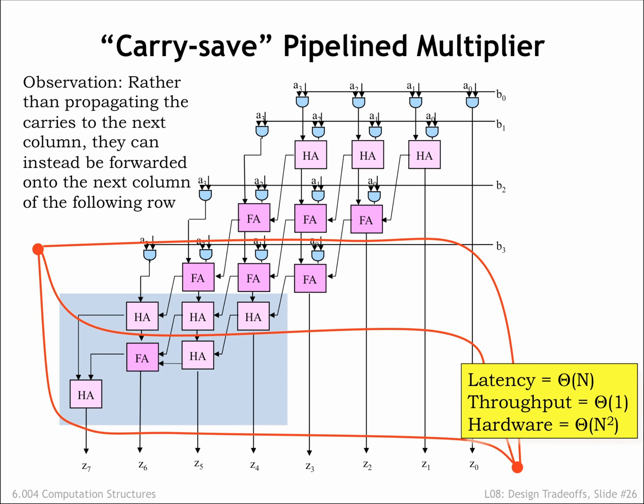To achieve a latency that's independent of N in each stage, we'll need order N contours. This means the latency is constant, which in order of notation we write as order 1. But this means the clock period is now independent of N, as is the throughput. They are both order 1.